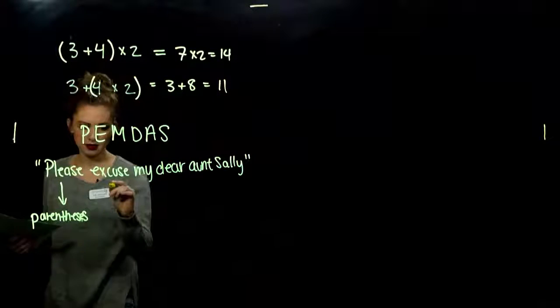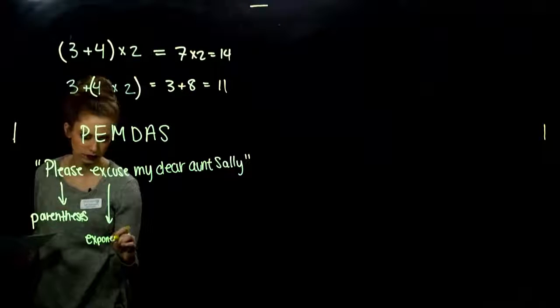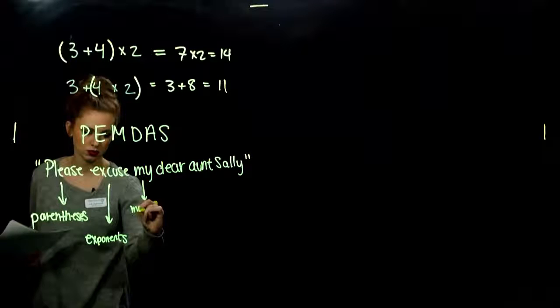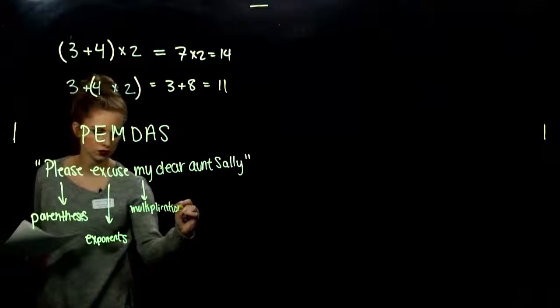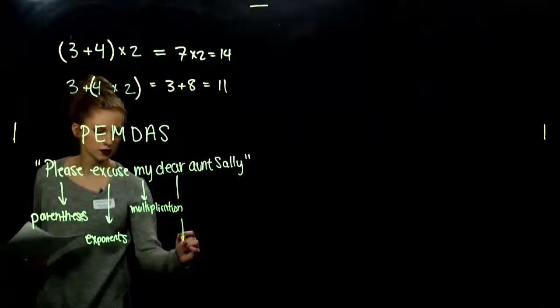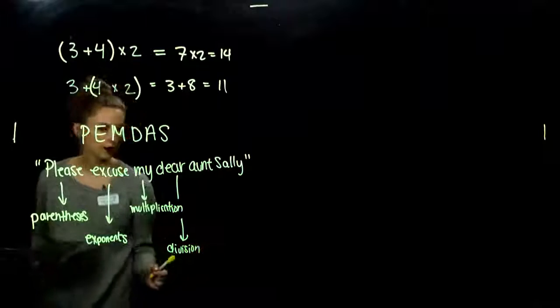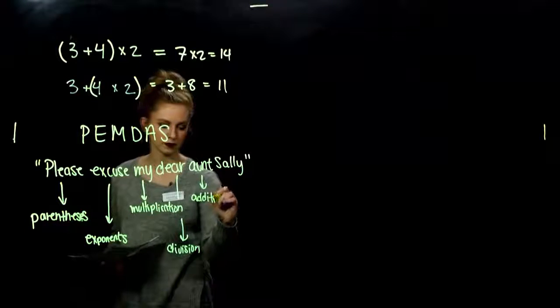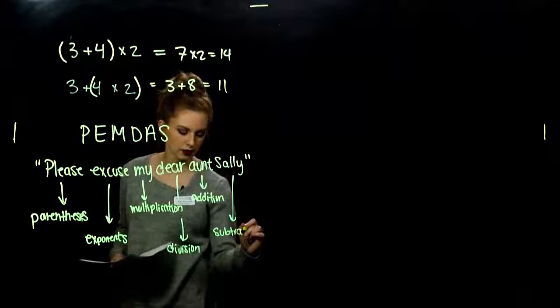What does it mean? So, the P tells us we need to compute the parentheses first or any kind of grouping symbol. Parenthesis. Parentheses. Okay, plural would be E. This is why I went into math. Because I can't spell for squat. All right, grouping symbols. Any kind of parentheses. E is exponents. Please excuse multiplication. Multiplication. And division. And then together, addition. And subtraction.